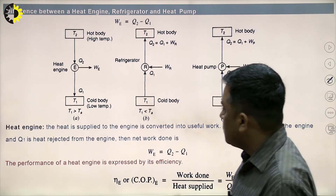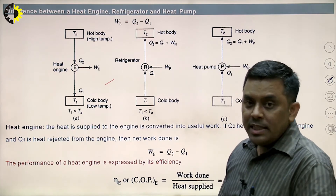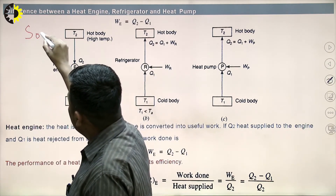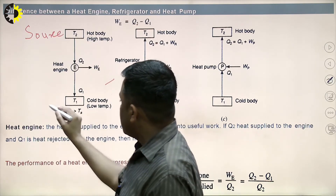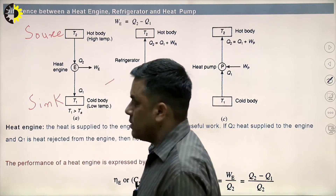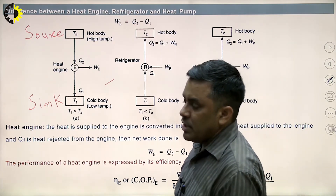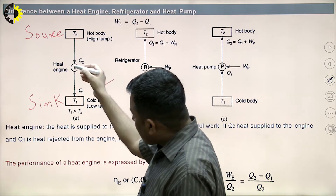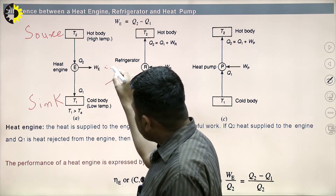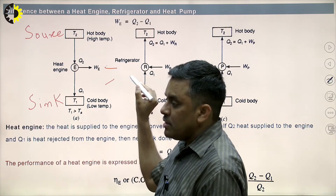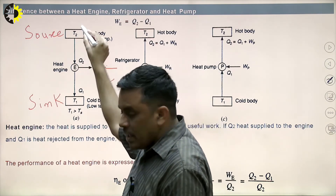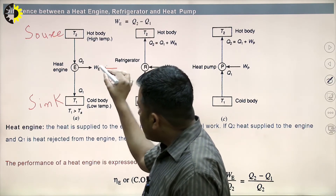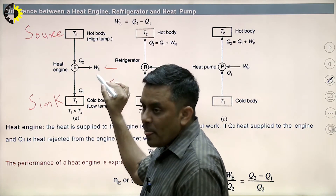The Kelvin-Planck statement says it is impossible to construct an engine which will produce net work while exchanging heat with a single reservoir. I am explaining this with a diagram. If there is heat exchange between two thermal reservoirs — the one at higher temperature is the source, and the one at lower temperature is the sink — it is not possible for any machine to take heat from the high temperature body and completely convert it into useful work.